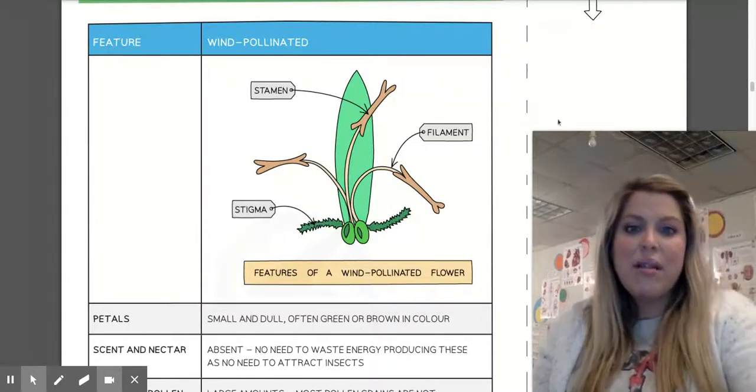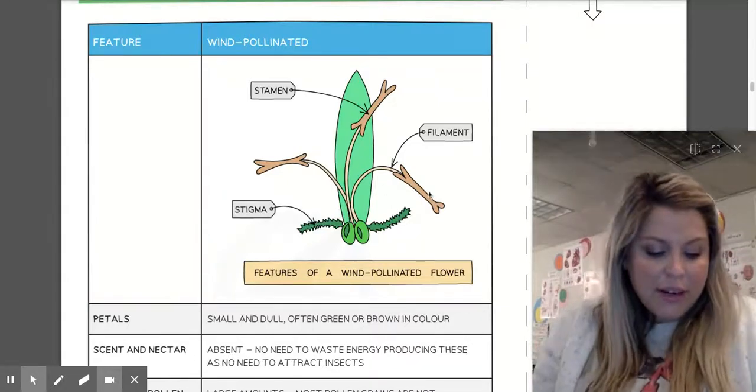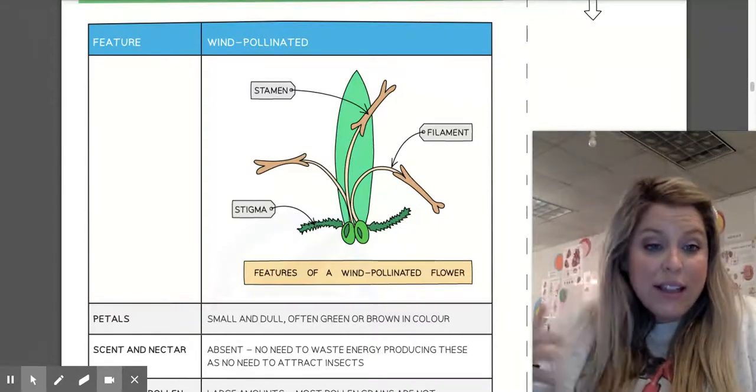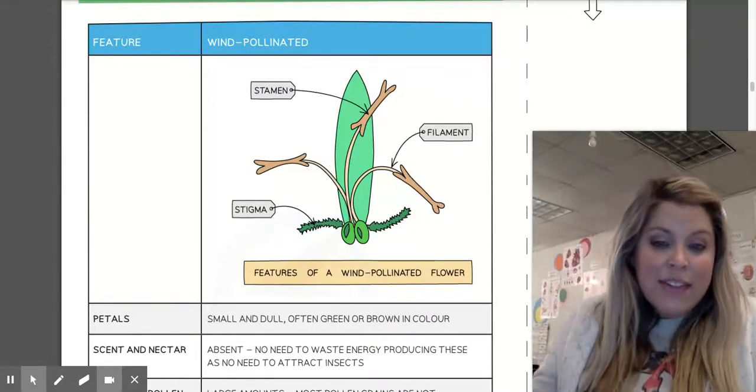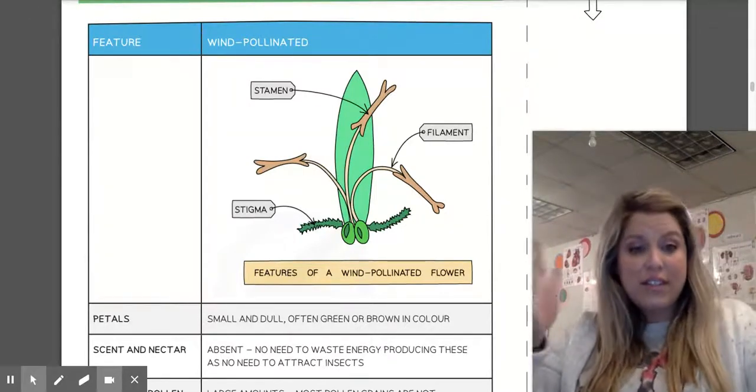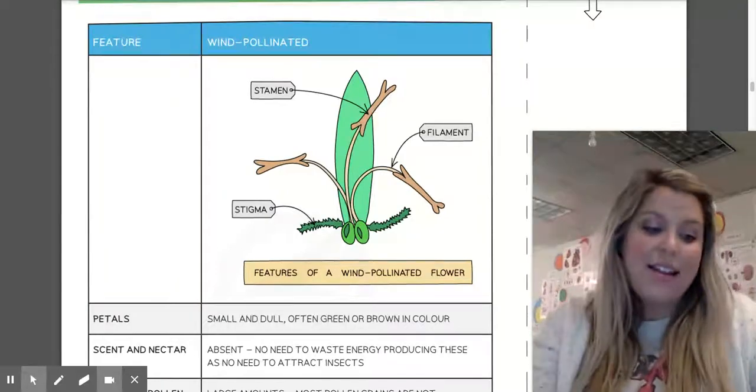And then for their anthers, those anthers are going to be outside of the flower so they can swing loosely on long filaments to release pollen grains easily. And then their stigma is also going to be outside of the flower and very feathery to catch any drifting pollen grains in the wind.